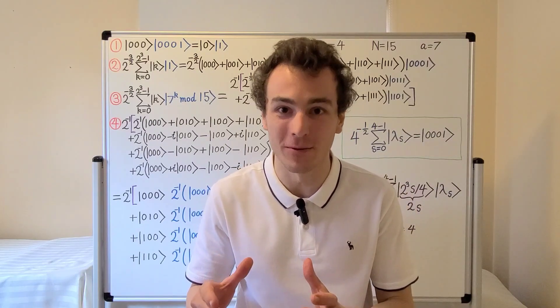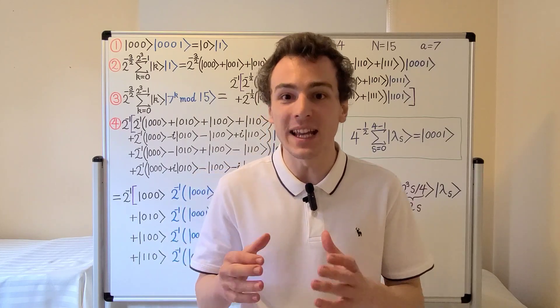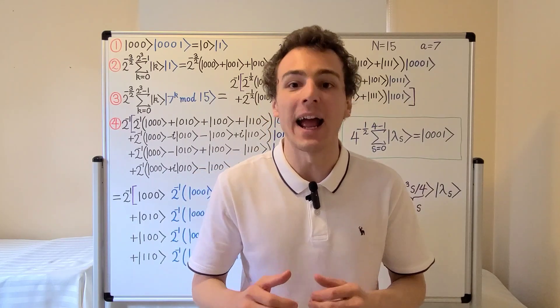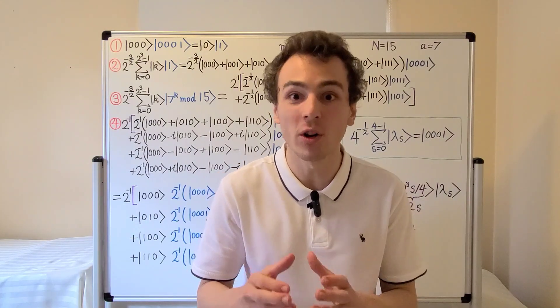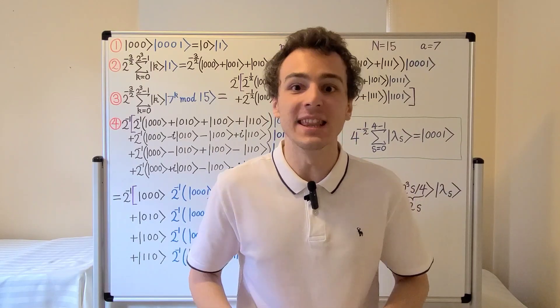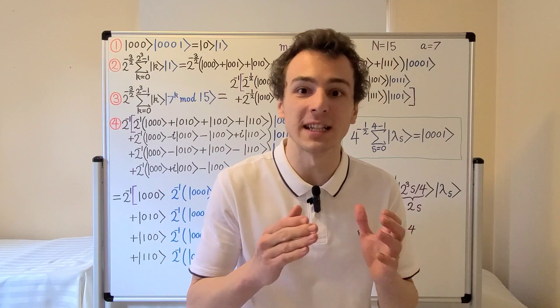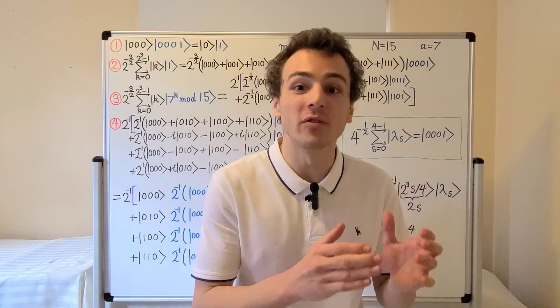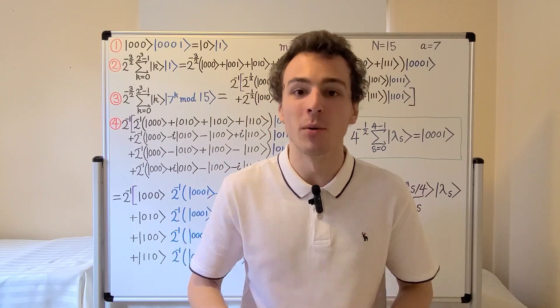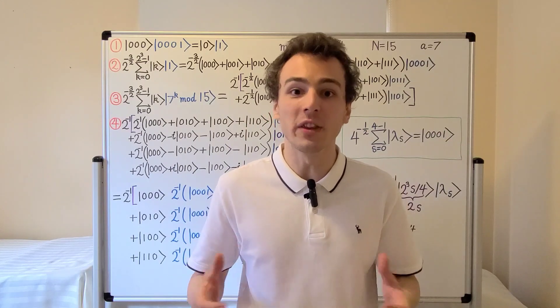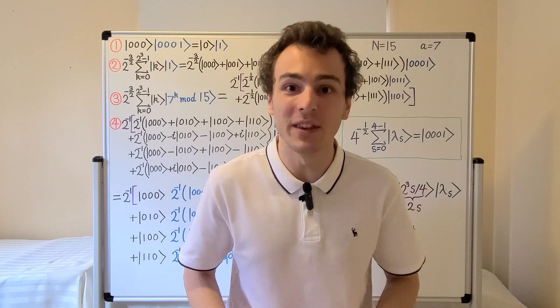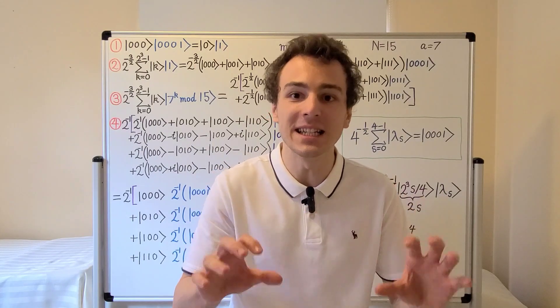In this video we're going to see another example of the quantum order finding subroutine of Shor's factoring algorithm. In the previous video we used the inputs n equals 15 and a equals 11, and we found that the order of 11 mod 15 is equal to 2. In this video we're going to switch to a equals 7, and we're going to see that the order of 7 mod 15 is equal to 4. Both of these values for the order are powers of 2, though in general the order does not have to be a power of 2. These are special cases which are going to give us some very neat expressions.